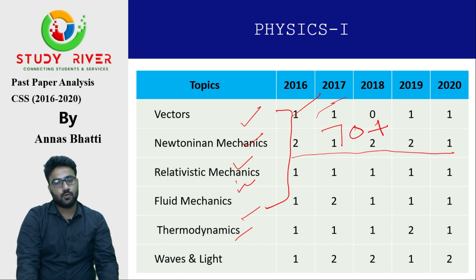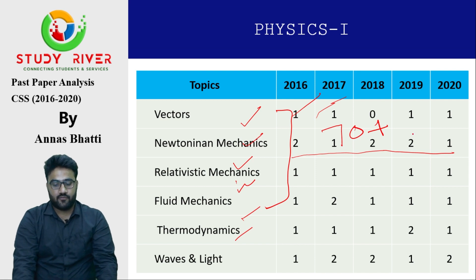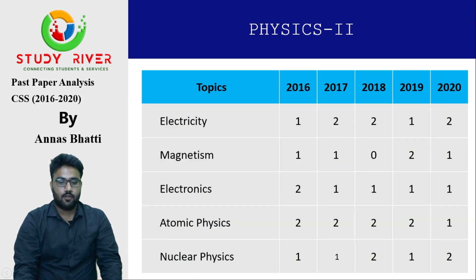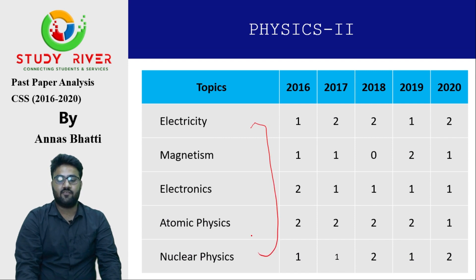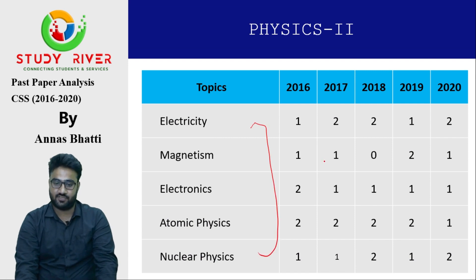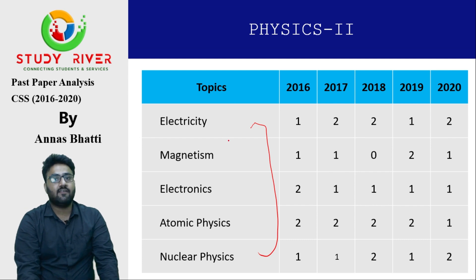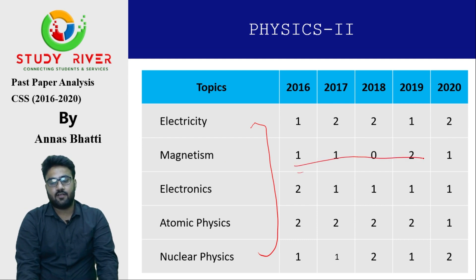This is Physics 2, which is of course divided into five major portions. There is one thing to note: magnetism is the least favorite part of the examiner, as questions from it have been missed.